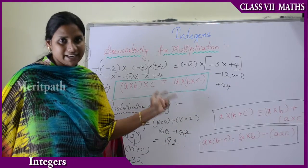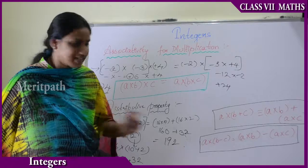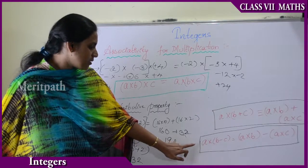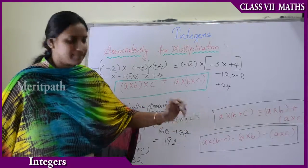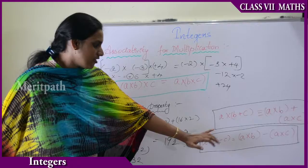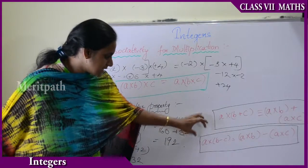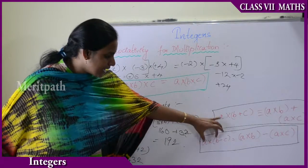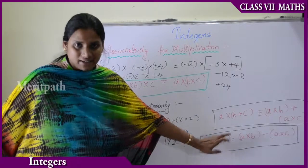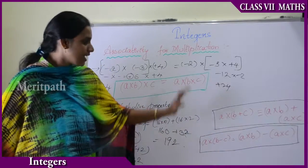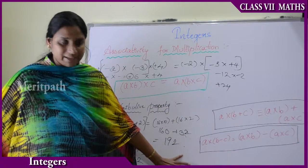The distributive property also applies to negative integers. If we replace plus C with minus C, we get: A into (B minus C) equals A into B minus A into C. This is the distributive property for multiplication over subtraction.